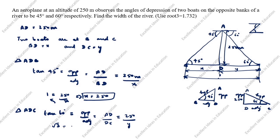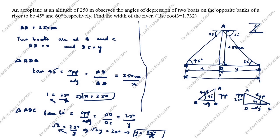Tan 60 is root 3, so root 3 = 250 / y. Cross-multiplying, root 3 × y = 250, therefore y = 250 / root 3. Now we find the total width of the river: BD + DC = 250 + 250 / root 3.